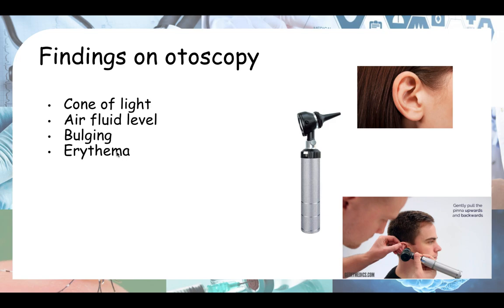In one patient, sometimes they might not have erythema — you might not see redness of the tympanic membrane. Sometimes you might not see the bulging; you might see air fluid levels. Sometimes there will be bulging but it's not prominent enough to cause the cone of light to be in the wrong anatomical position. So you have to evaluate based on a combination of all these signs and not just one of them.